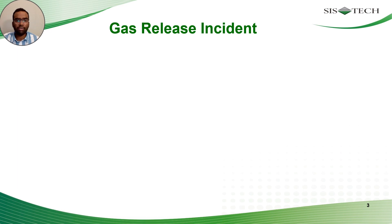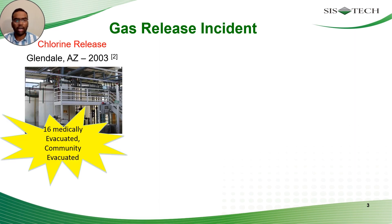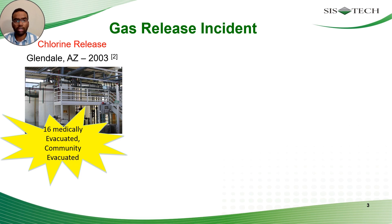Let's start with the incident. This is a gas release incident that happened at DPC Enterprises in Glendale, Arizona. They had a chlorine release which led to 16 medical evacuations and nearby community evacuations. This facility repackaged chlorine from rail cars to small containers. The chlorine scrubber at this facility had two purposes: one is to capture all the chlorine vented in the repackaging operation, and second is to produce a sellable bleach. The operating conditions for these two purposes were not identical, and operating the chlorine scrubber as both a safety device and a by-product generation unit required utmost care and had an increased likelihood of toxic release.